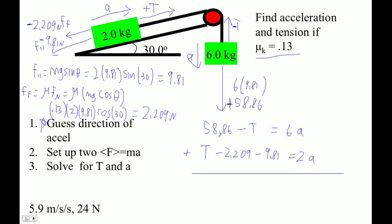So let's see. 6A plus 2A is 8A. And then here, the T's go away, but 58.86 minus that number, minus 9.81, is 46.841 equals 8A.